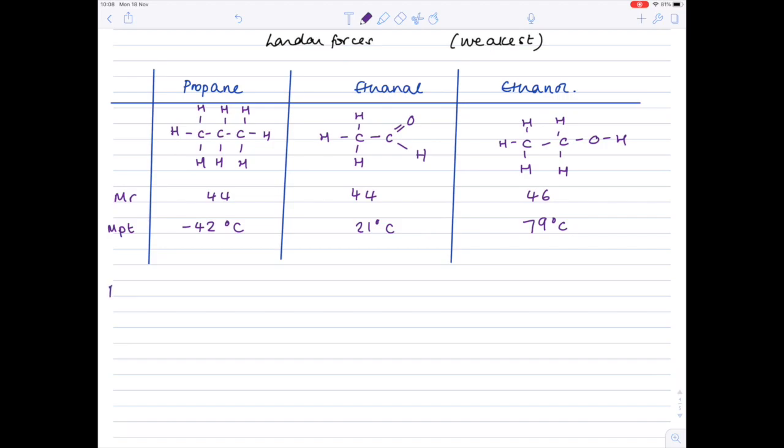Well we first need to consider their polarity. So are they polar molecules or not? Propane is non-polar. Ethanol is polar. And ethanol is polar. So what type of bonding exists?